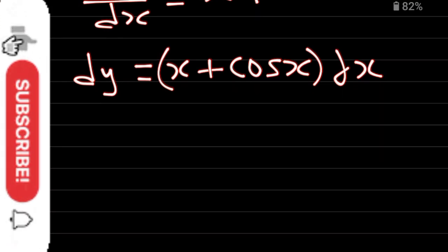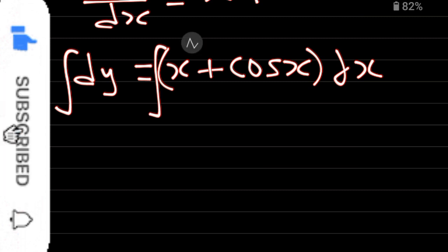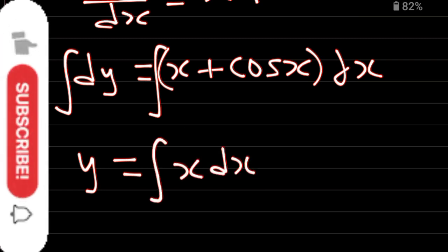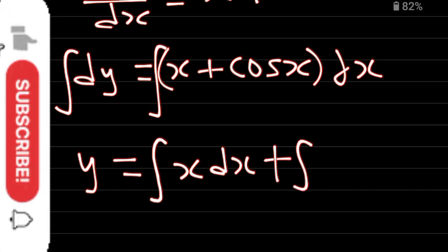Integrate both sides. We have integration of this, integration of this. Therefore integration of dy will give me y. It's now equal to integration of x dx plus integration of cos x with respect to x.